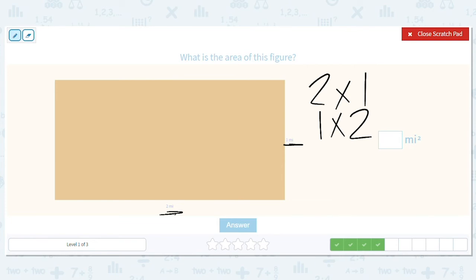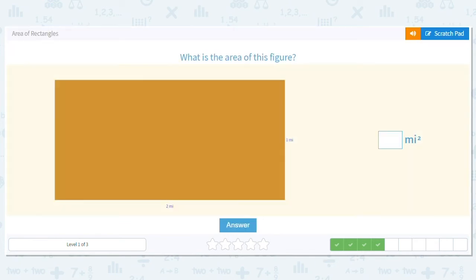Remember, flipping those numbers around for multiplication, you're still going to get the same product, the same answer. So two times one, or one times two, equals two.